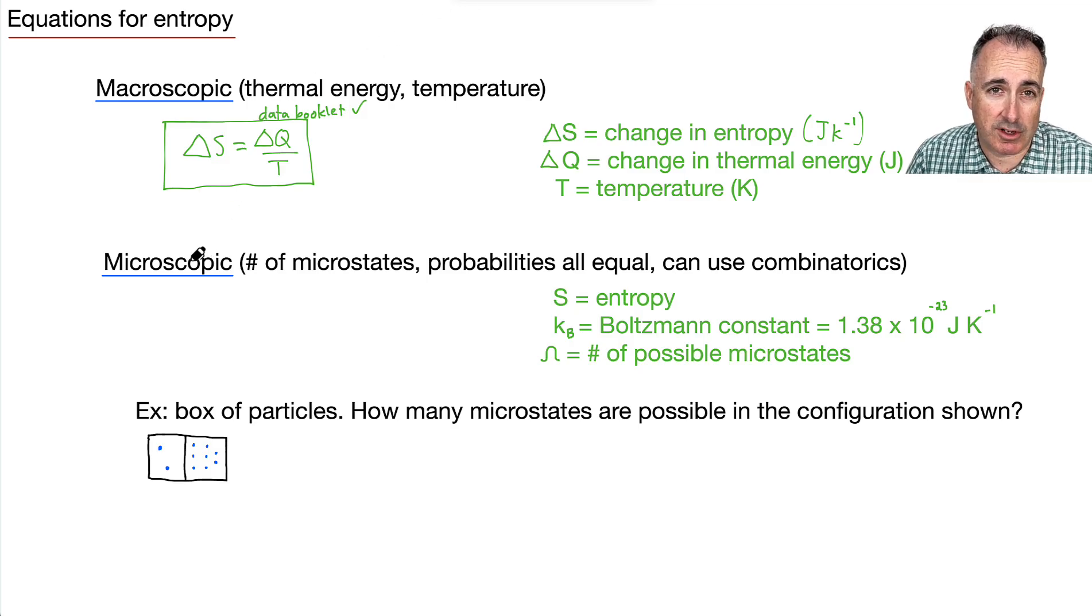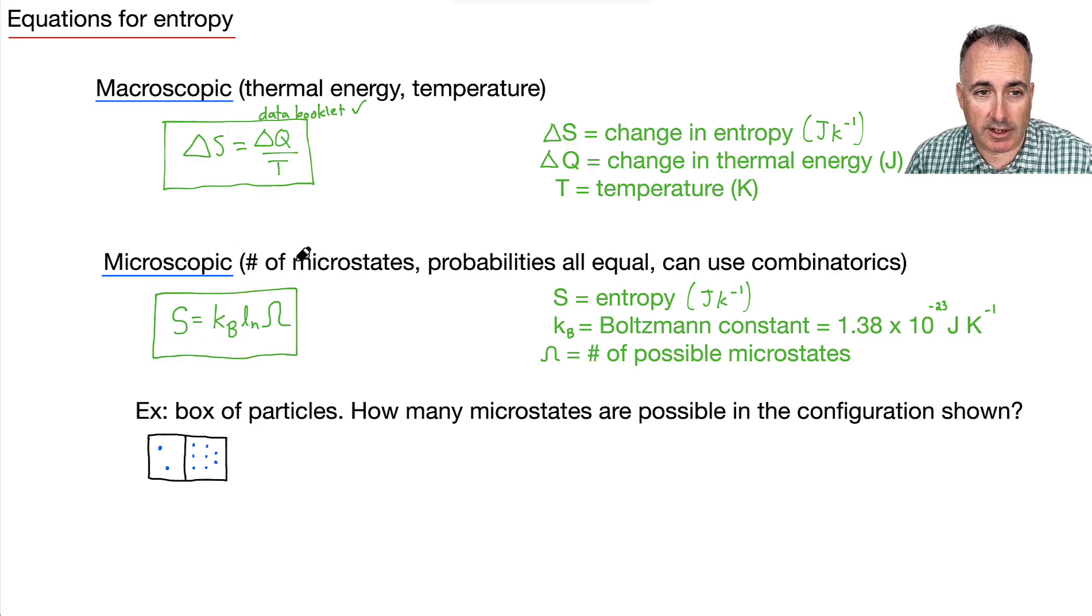And that's a more straightforward way. However, there's a little bit of a stranger version. It's this microscopic version. We say it's the number of microstates. So we assume that all the probabilities are equal, and we can use something like combinatorics. This will get a little bit weird. But let's first show you the equation. Entropy is still going to be measured in joules per Kelvin.